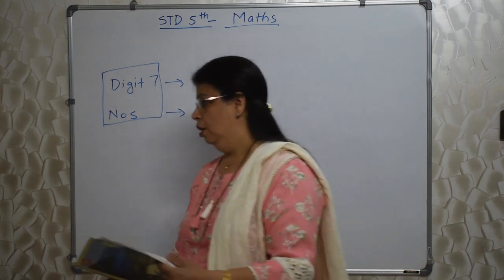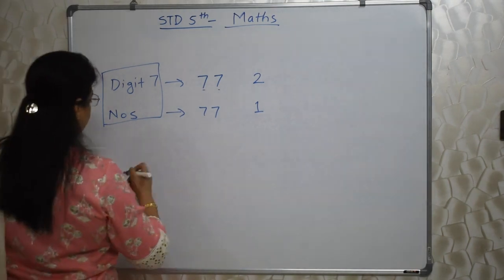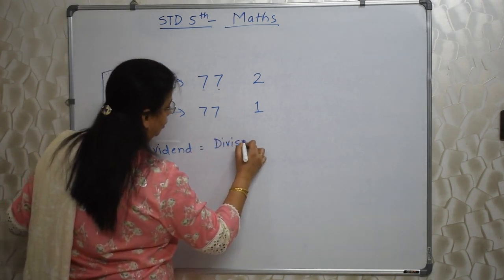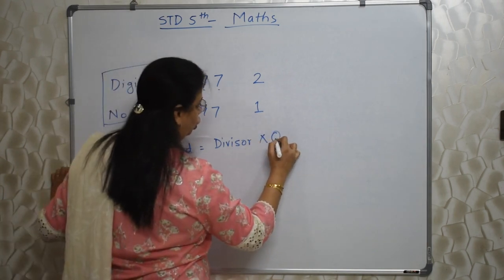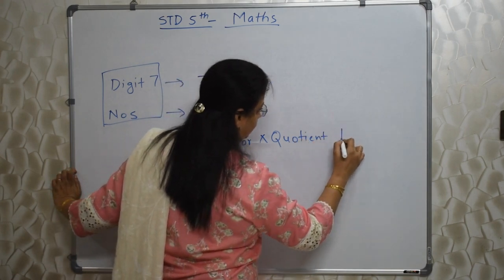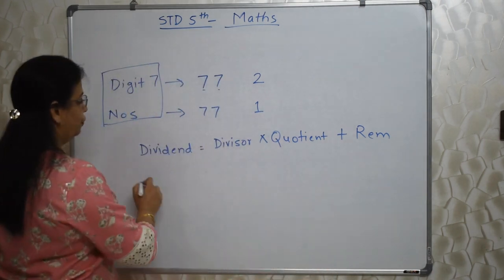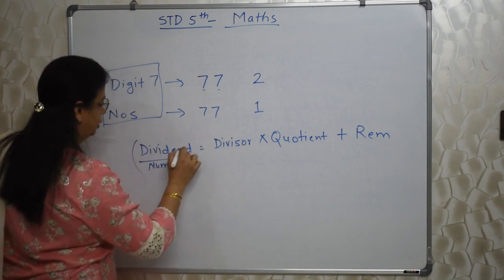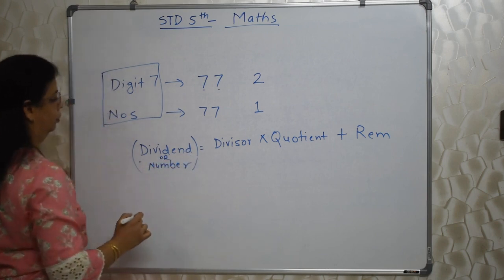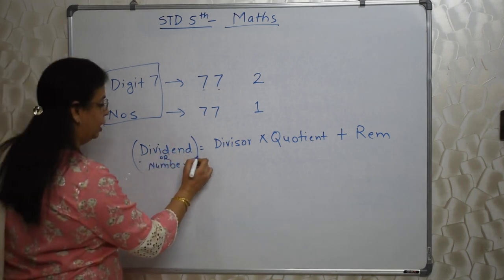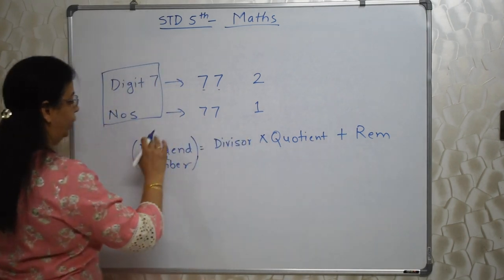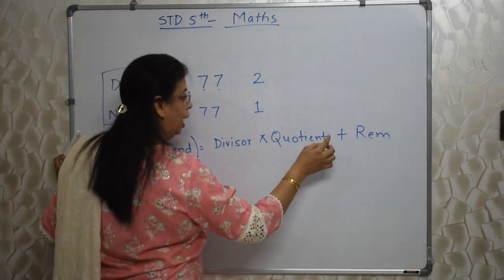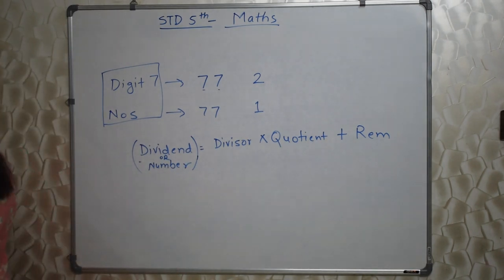There is one formula in division: Dividend = Divisor × Quotient + Remainder. This formula is very important. Dividend means the number. Many times they give you divisor, quotient, and remainder and ask you to find the number. In that case, use this formula — first do the multiplication, then add the remainder to get the dividend.